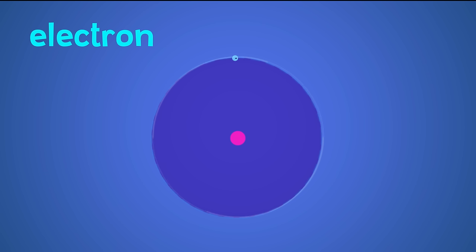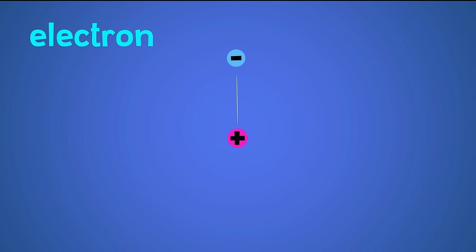Electrons do this because they have a negative electrical charge, which always pulls towards the proton's positive electrical charge. This pull between the positive protons and the negative electrons is called the electric force, and it's always there.